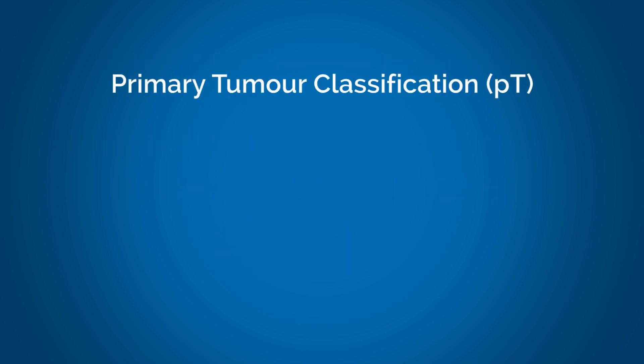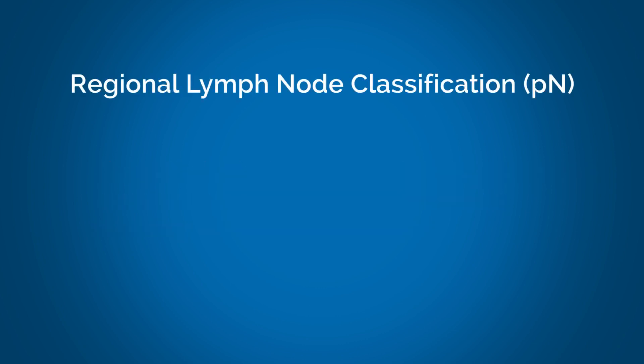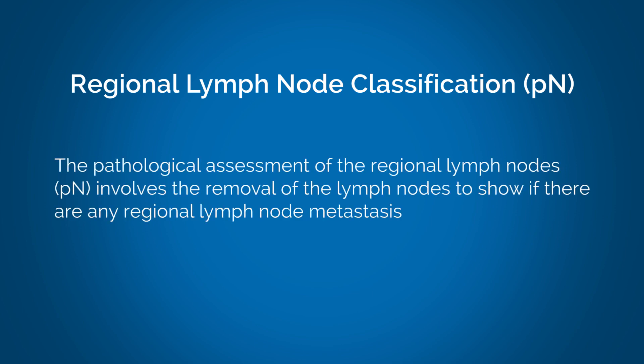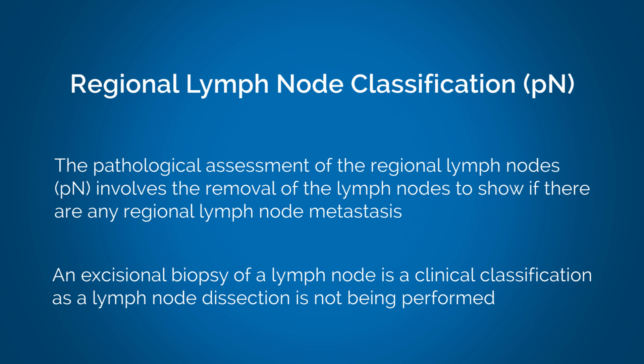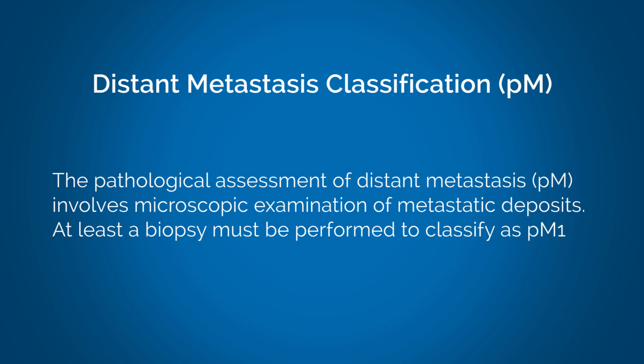Primary tumor classification — pT. Pathological assessment of the primary tumor is only used if there has been resection of the primary tumor. Regional lymph node classification — pN. The pathological assessment of the regional lymph nodes involves removal of the lymph nodes to show if there are any regional lymph node metastases. Note: an excisional biopsy of a lymph node is a clinical classification, as a lymph node dissection is not being performed. Distant metastases — pM. The pathological assessment of distant metastases involves microscopic examination of a metastatic deposit. At least a biopsy must be performed to classify as pM1.